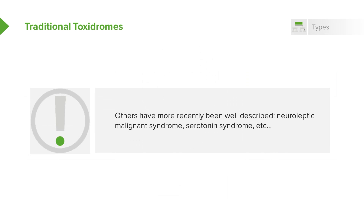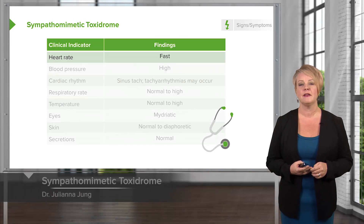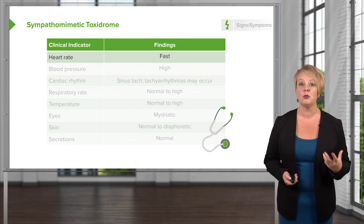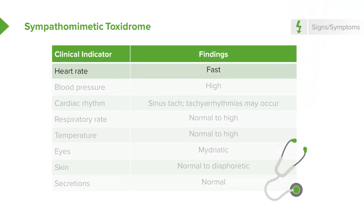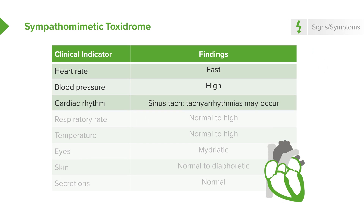There are other toxidromes described more recently, including neuroleptic malignant syndrome and serotonin syndrome, but the five traditional toxidromes are what we'll focus on today. Starting with sympathomimetics — these simply upregulate the sympathetic nervous system. They increase heart rate, increase blood pressure, and generally produce sinus tachycardia, although in high doses they can also precipitate tachyarrhythmias.